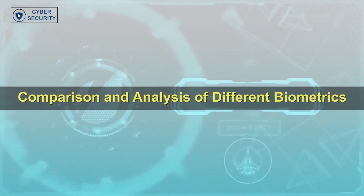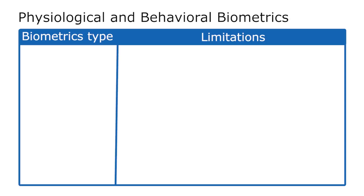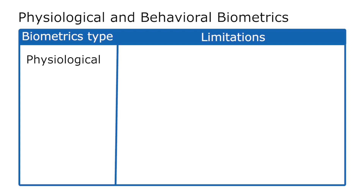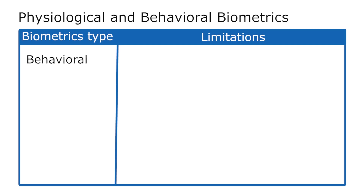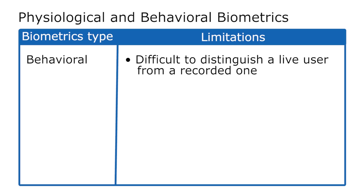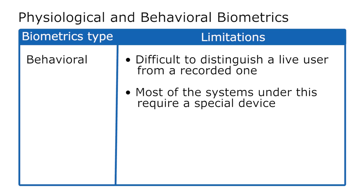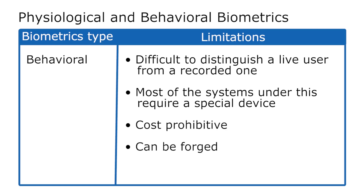We will now compare the different types of biometrics — physiological and behavioral — each having its own advantages and limitations. Physiological biometrics can be spoofed, are difficult to implement, expensive, require special hardware, and are more intrusive. Behavioral biometrics, on the other hand, are difficult to use to distinguish a live user from a recorded person. Most systems require a special device, can be cost prohibitive, and can be forged.